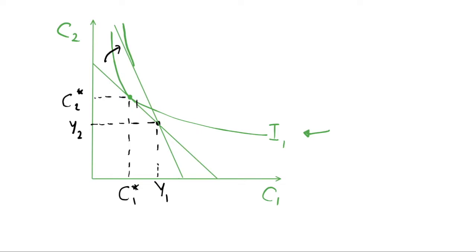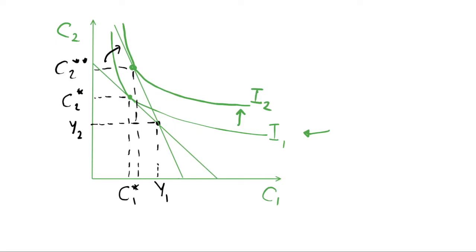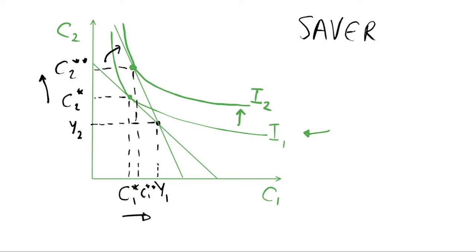If we look, the tangency condition will be somewhere around here — not a great drawing but it will do. We move up to a higher indifference curve I2, and we have a tangency point about here. So if we draw the values of c1 and c2 for that, we will have c2 star star and c1 star star — that's our new consumption. We increase c1 and we also increase consumption of c2 after this change in interest rate. As we saw in the previous video, this is a saver — they were initially consuming less than their income in period one, saving that income and consuming more than their income in period two, and this is still the case even after the change in interest rate.